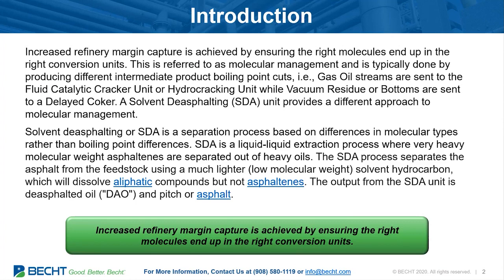The solvent de-asphalting process is not a fractionation process. Instead, it's a separation process — a liquid-liquid extraction process. It uses the difference in solubility between asphaltenes and paraffins to make that separation. In the extreme, we have paraffins and asphaltenes, while in the middle we have resins and aromatics. In the solvent de-asphalting unit, we're really focused on asphaltenes and paraffins. Obviously, the aromatics and resins fall in between, and that affects the type of separation we're actually doing in the solvent de-asphalting unit.